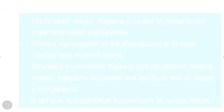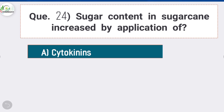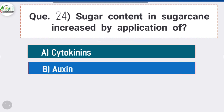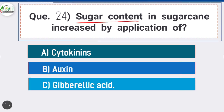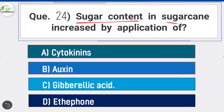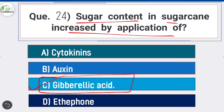Question 24: Sugar content in sugarcane is increased by application of — option C is correct: gibberellic acid. Foliar application of gibberellic acid has an overall effect on increasing the yield of sugarcane.